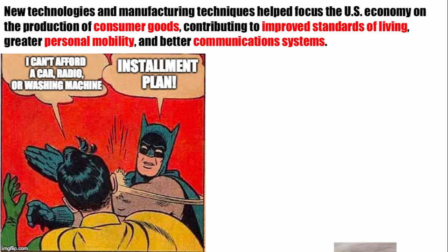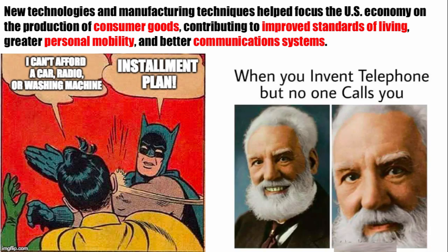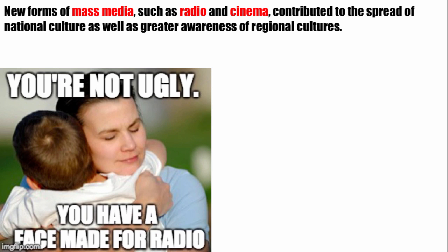If you couldn't afford all these new consumer goods, there was a new way of purchasing things on credit — buying consumer goods with the installment plan. Better communication systems included the telephone becoming much more widespread, common, and affordable for many Americans, especially in urban areas, but also the rise of the radio and other forms of technology.